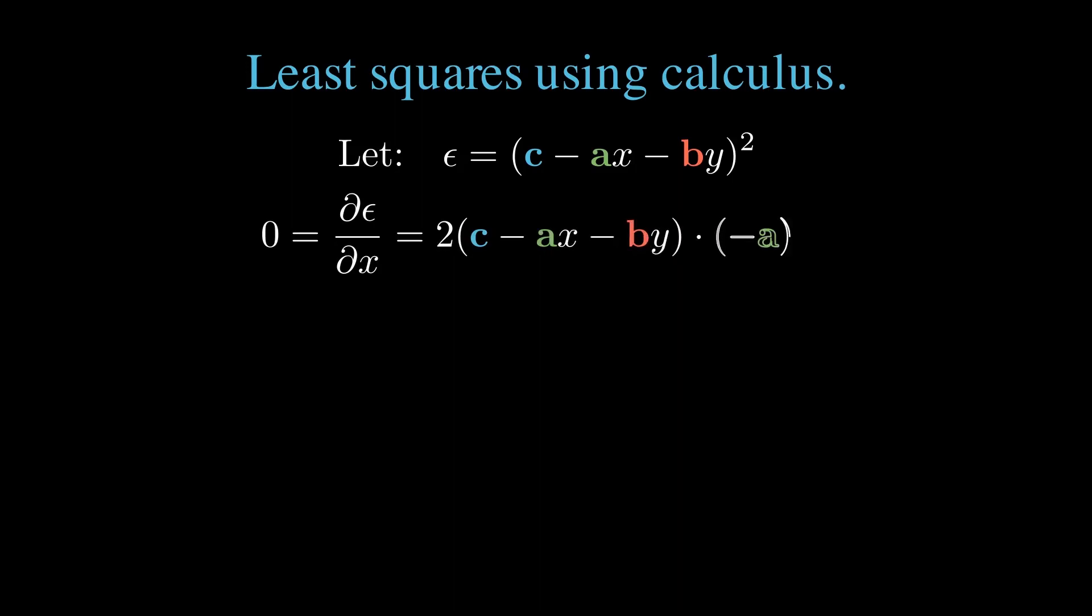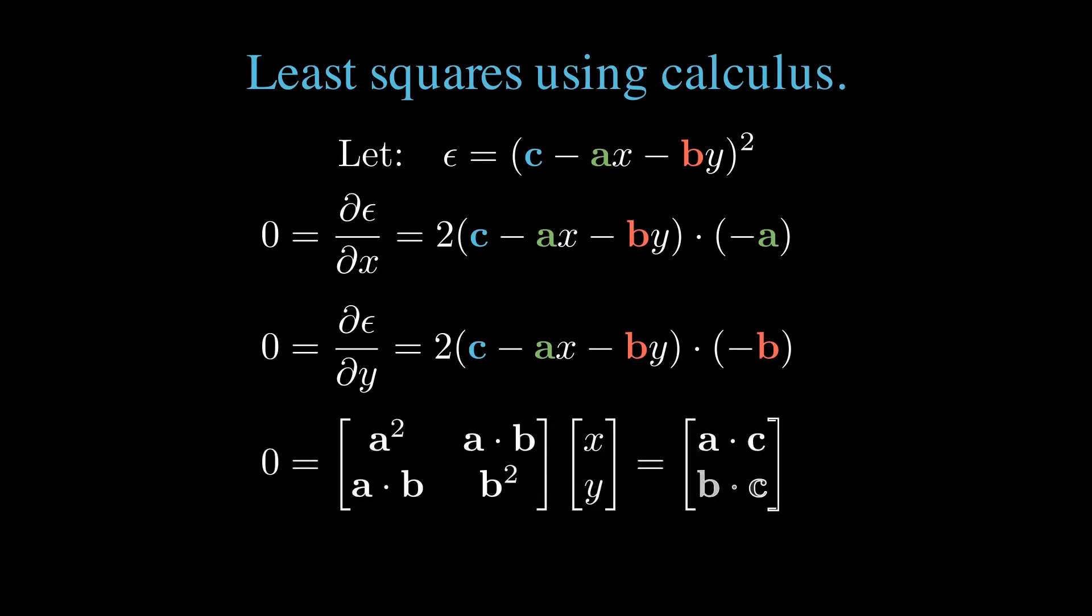To find our minimum error, we take partial derivatives with respect to x and y. The partial derivative of epsilon with respect to x is just two times c minus ax minus by all times minus a, and the partial derivative of epsilon with respect to y is the same thing dotted with minus b. Equating each of these to zero, we can write this as a two variable system in matrix form.